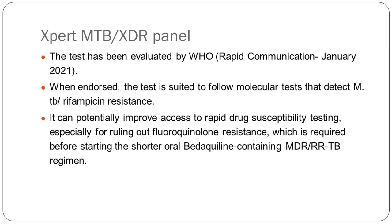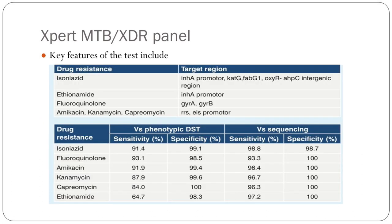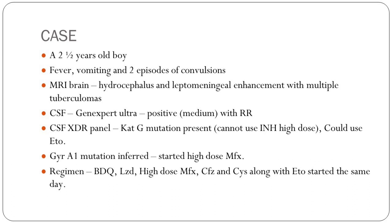In Mumbai we are very rarely able to start the shorter BDQ oral regimen in children. If we get the XDR panel data, we may be able to determine whether we can go on to oral BDQ. The DST pattern of Mumbai shows that 50% of patients are resistant to ethambutol, resistant to pyrazinamide, and resistant to ethionamide — so we are hardly able to put patients onto the shorter oral regimen. The XDR panel sensitivity and specificity is pretty good.